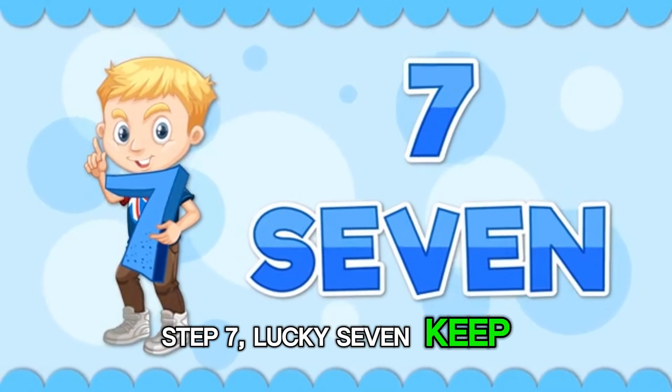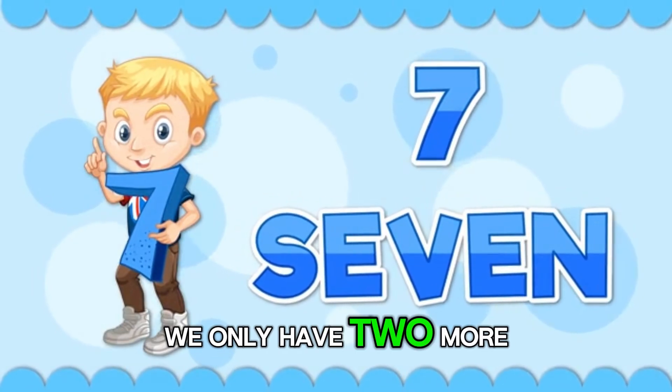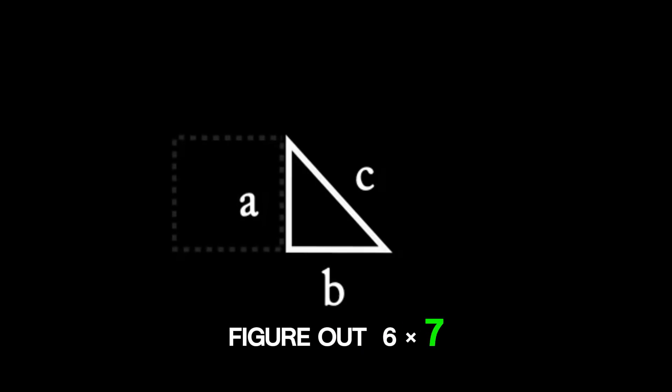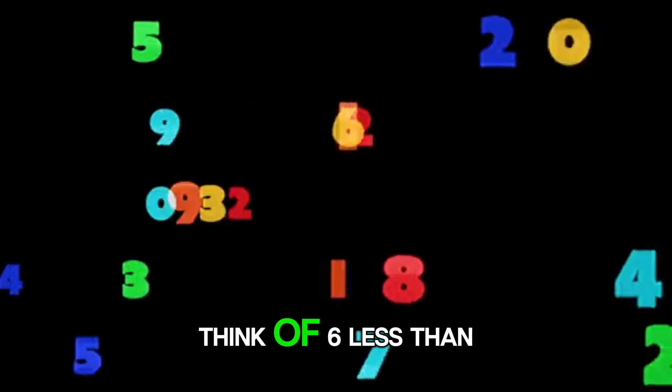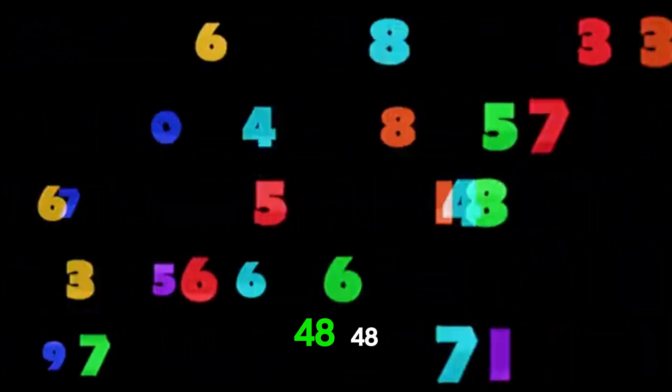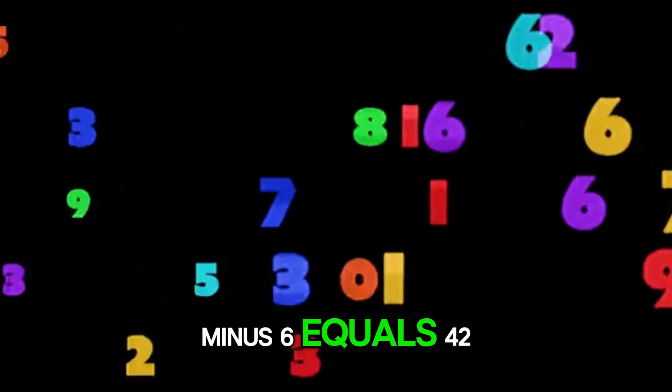Step 7. Lucky 7. Keep going. We only have a few more to go. Now we need to figure out 6 times 7 equals 42. Here's a little trick. Think of 6 less than 48. 48 minus 6 equals 42.